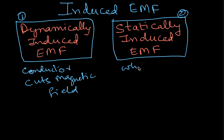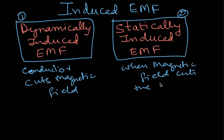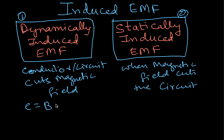The other type is the statically induced EMF, where the magnetic field cuts the conductor — or I would say, the circuit. It should be a closed circuit. We have studied dynamically induced EMF in the previous videos. The EMF equation is E = BLV, where B is flux density, L is length, and V is velocity.